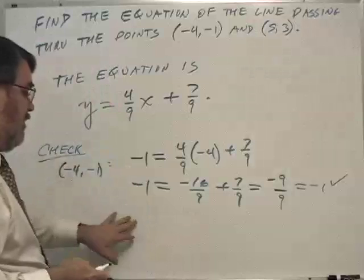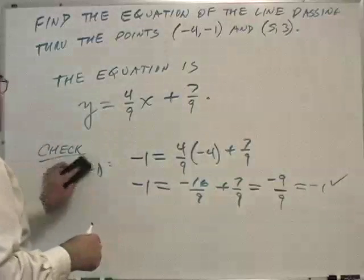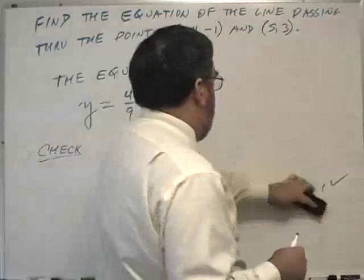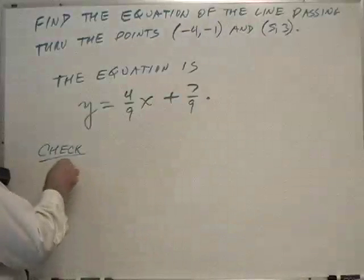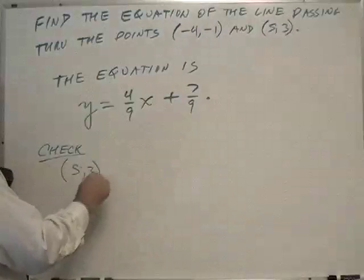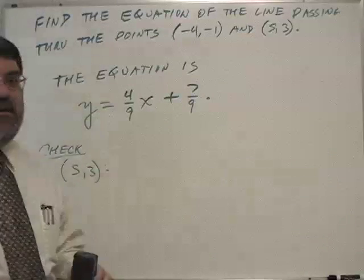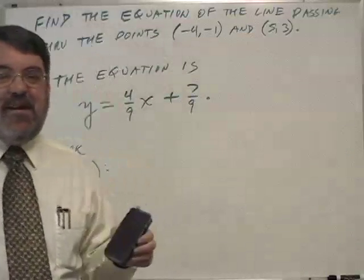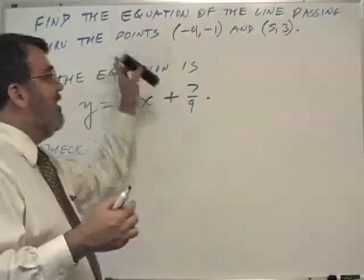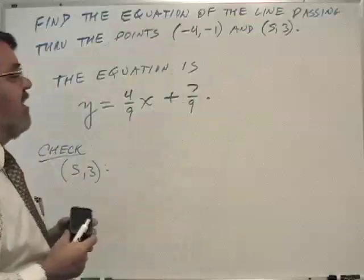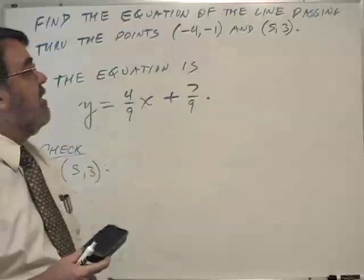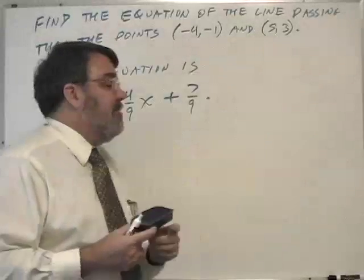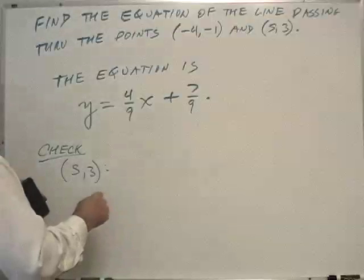All right, I'm going to check the other point. And I'm going to erase this to make room because I have a small board. Here, the other point, 5 comma 3. And incidentally, if you're going to check your work, it only makes sense to check all the information you begin with. Because it's possible to get the wrong equation where that fits in it correctly, but that one doesn't. So we need to check them both.